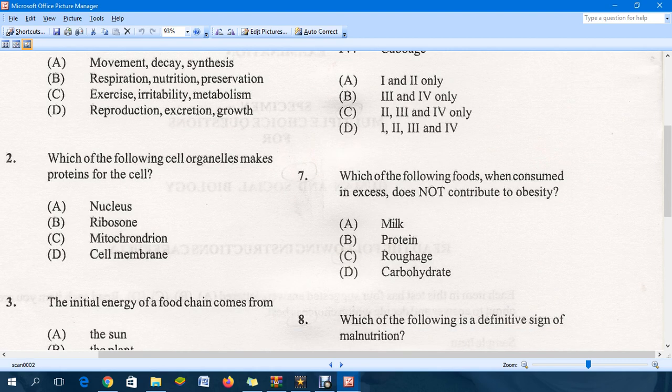Question seven: Which of the following foods when consumed in excess does not contribute to obesity? Milk - if you consume a lot of milk you're consuming a lot of fat. Excess protein can be converted into fat in the human body, and carbohydrates also. So definitely C is the correct answer, which is roughage.